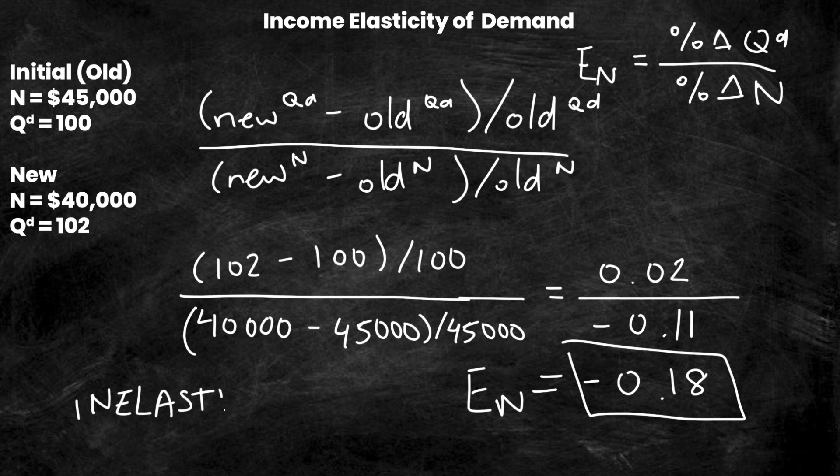So firstly, we know that 0.18 is less than 1, so we know that this is in fact inelastic. But moreover, it's interesting that it's negative, and that's important when it comes to income elasticity of demand, because whether the elasticity is positive or negative will tell you if the good is an inferior or normal good. Traditionally, if your income would go down, that would mean you would demand less of a good. Well, that's only true for normal goods, where your income is positively related to the amount that you would buy.